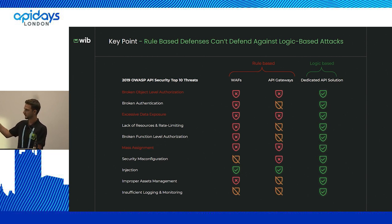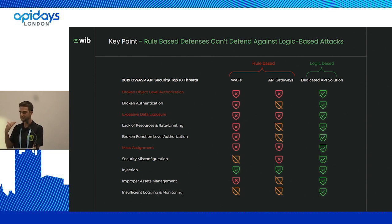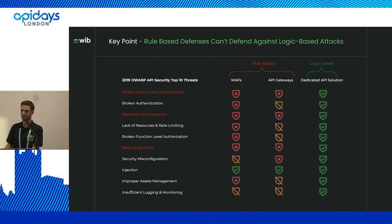WAF does a great job on injections, but logical bypasses and excessive data exposure won't be detected because everything looks valid and correct. It won't alarm us. However, if someone gets all the data of our customers, we'd probably have to shut down the company. Expecting WAF to block logical things is like expecting a fish to fly — it wasn't designed to protect our API, it was designed for web applications, and it does a great job in that area.